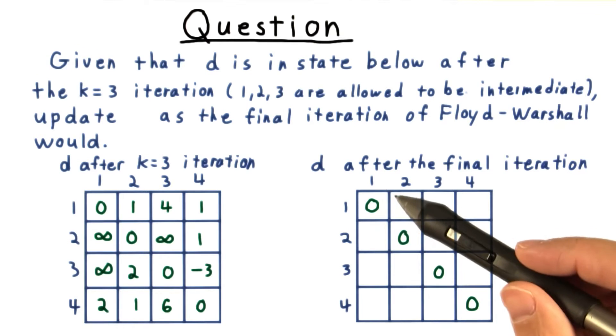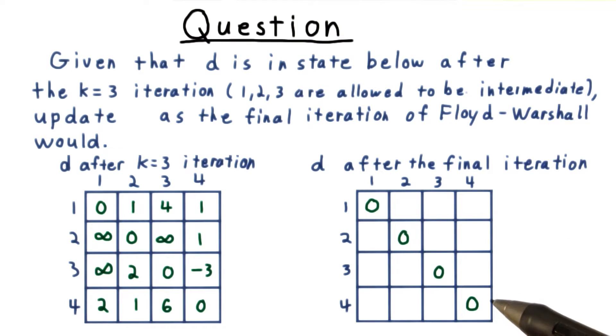Here's my answer. The first thing I did was to fill in the diagonals. These should all be 0, unless there's a negative cycle.